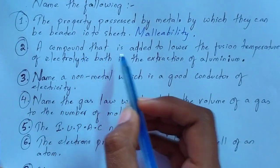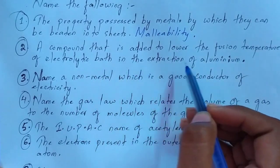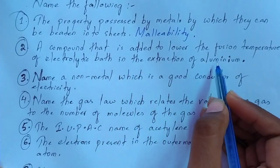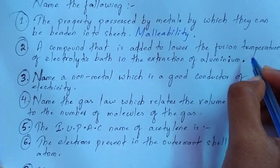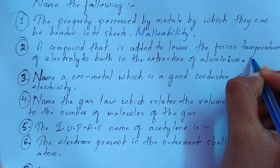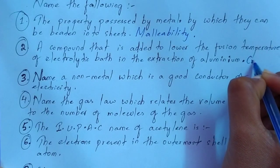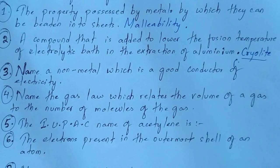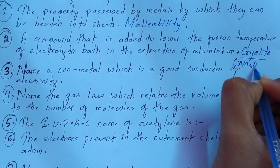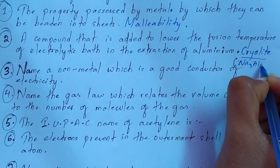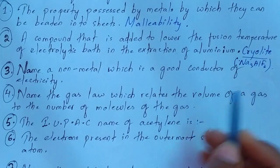Question number 2: name the compound that is added to lower the fusion temperature of the electrolytic bath in the extraction of aluminium. This is also from your metallurgy chapter. The compound is called cryolite, with the formula Na3AlF6. You must remember the formula as well.